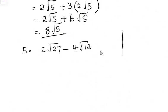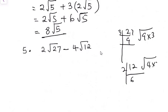So we look for the factor of 27, which will be 9. So we have 9 times 3. And then we look for the factor of 12, which will be 2 and 6 or 4 and 3. So we have 4 times 3. Now we can come to this side and say 2√(9×3) - 4√(4×3).